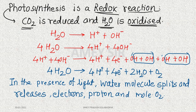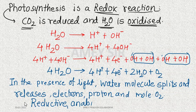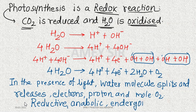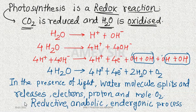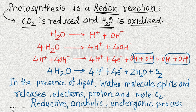Thus, the bottom line is: photosynthesis is a reductive, anabolic, endergonic process. This was the introductory part and explanation of the definition of photosynthesis and various concepts. In the next part we will meet with early experiments in photosynthesis. Thank you very much.